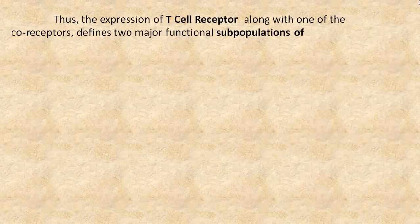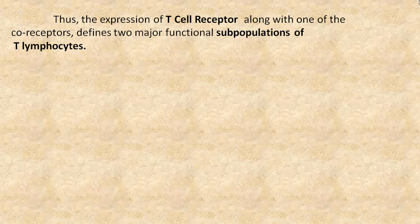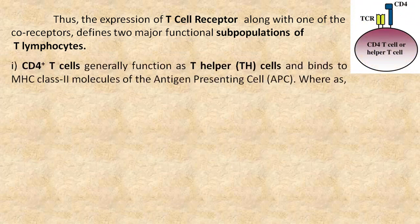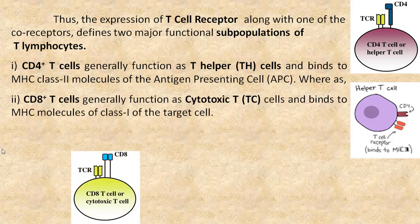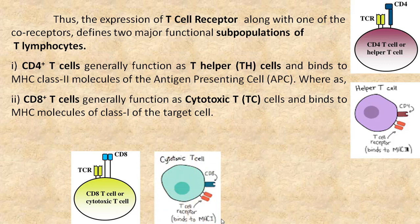The expression of T cell receptor along with one of the coreceptors defines two major functional subpopulations of T lymphocytes. CD4 T cells generally function as T helper cells and bind to MHC class 2 molecules of antigen presenting cells, whereas CD8 T cells generally function as cytotoxic T cells and bind to MHC class 1 molecules of the target cell.